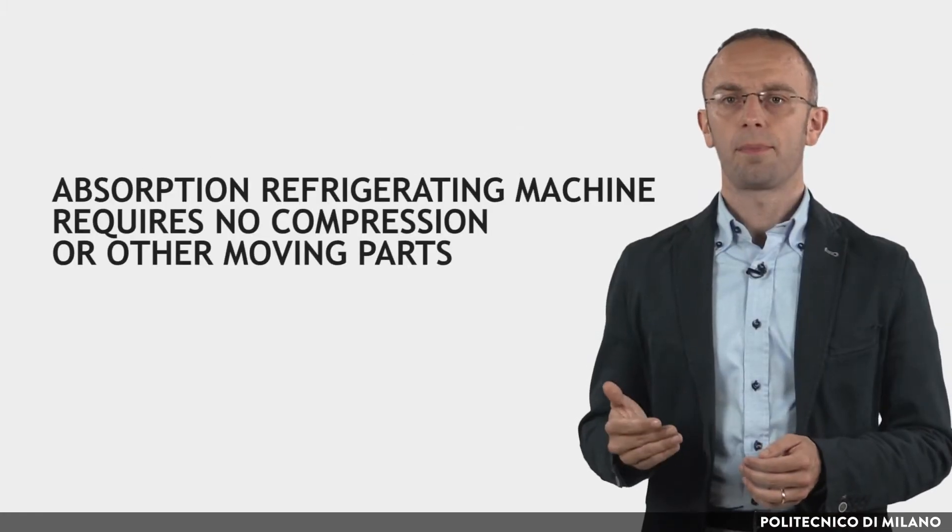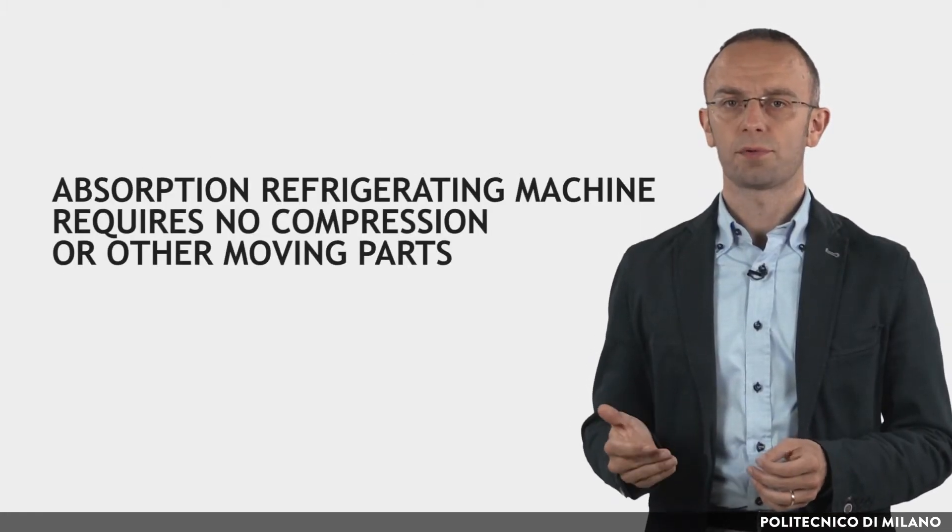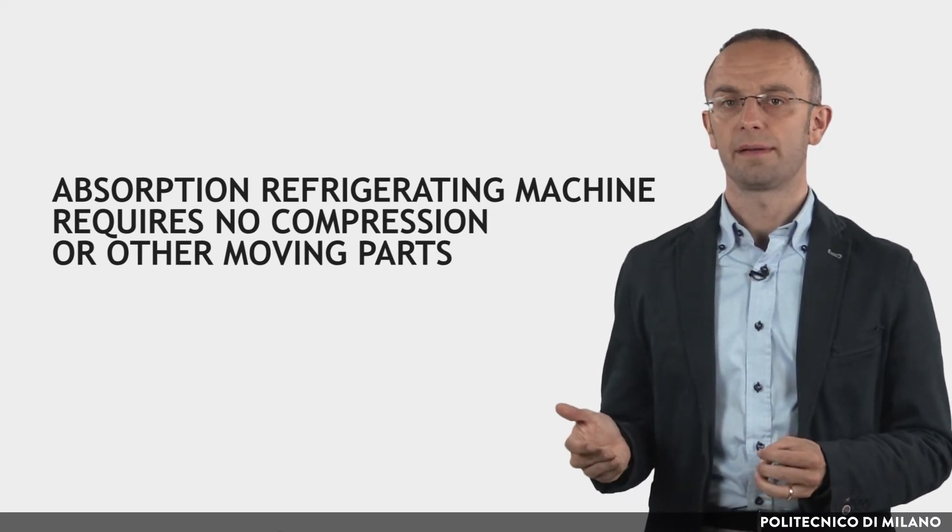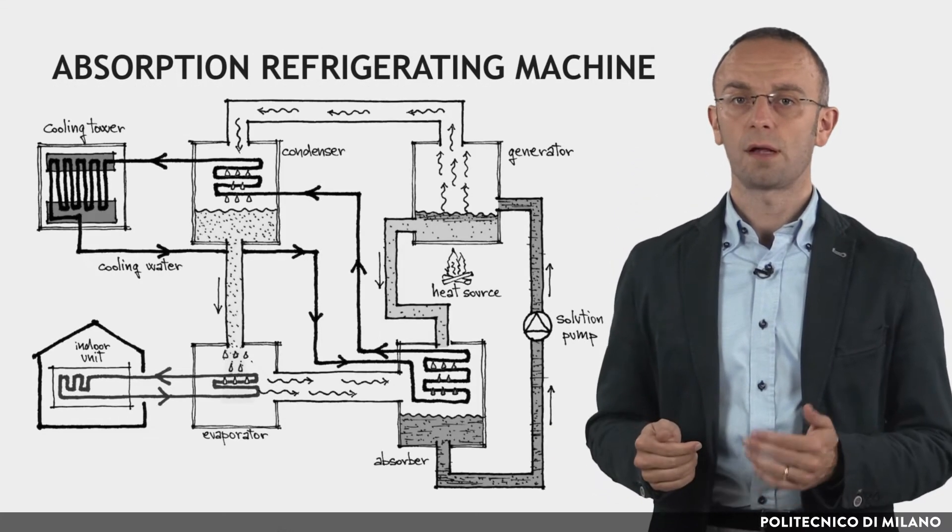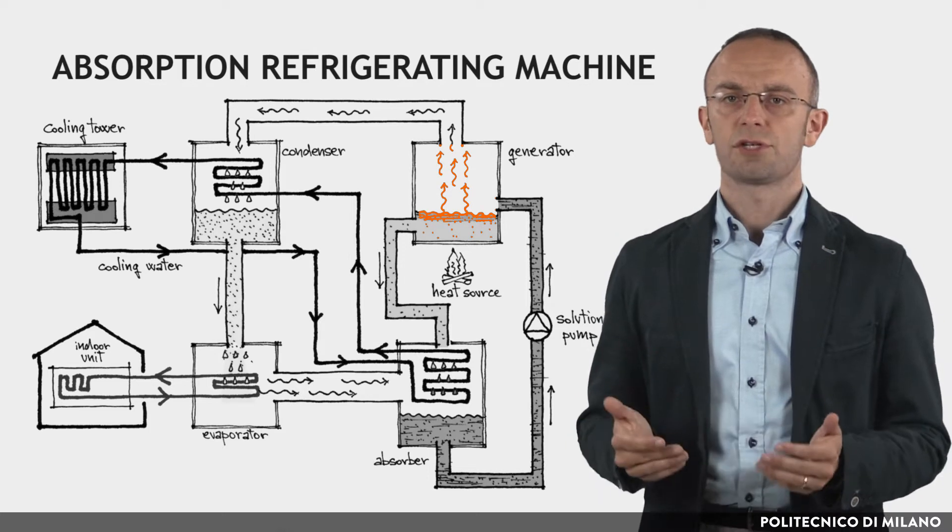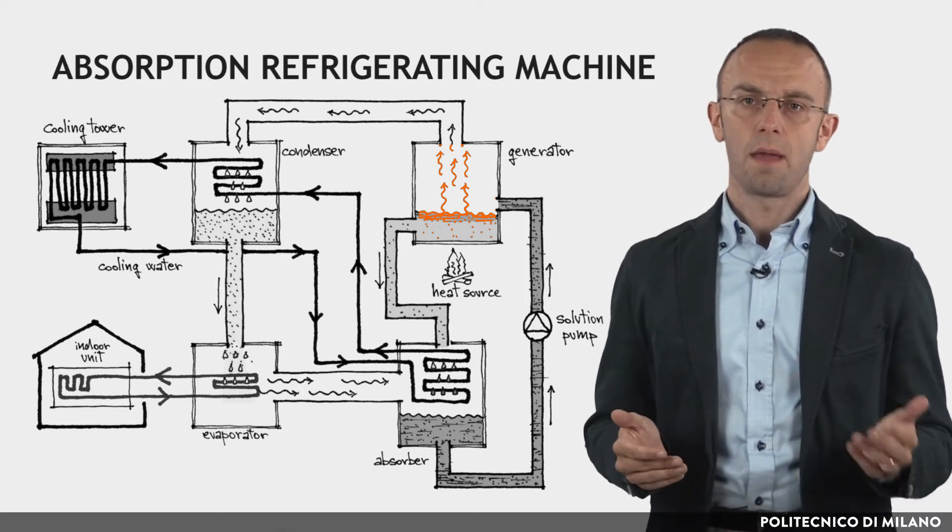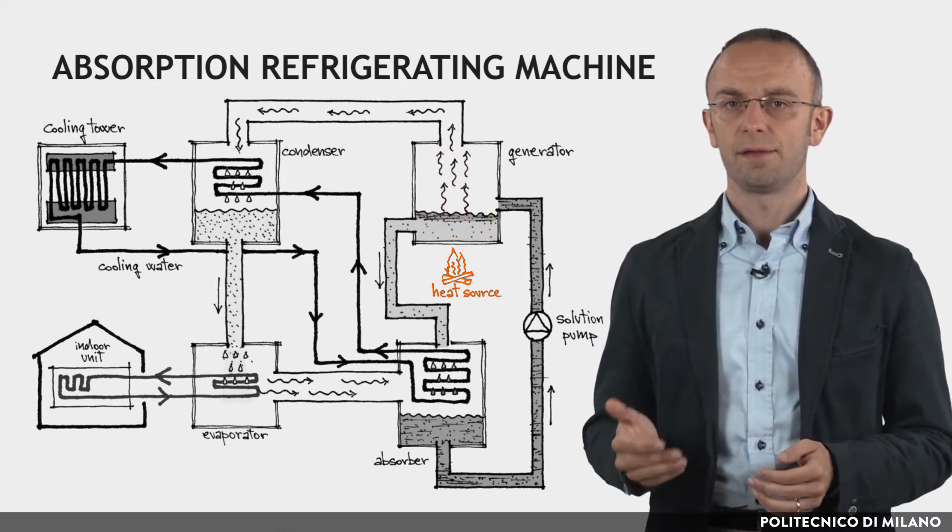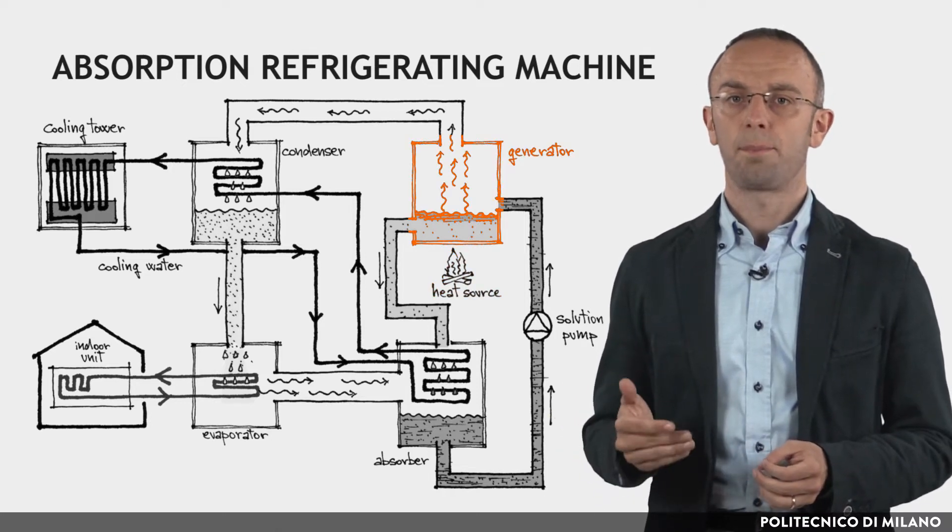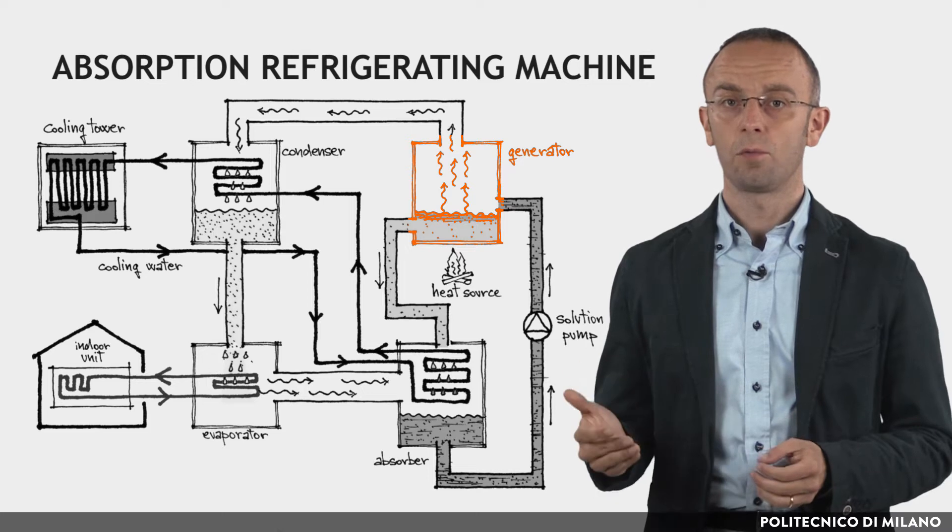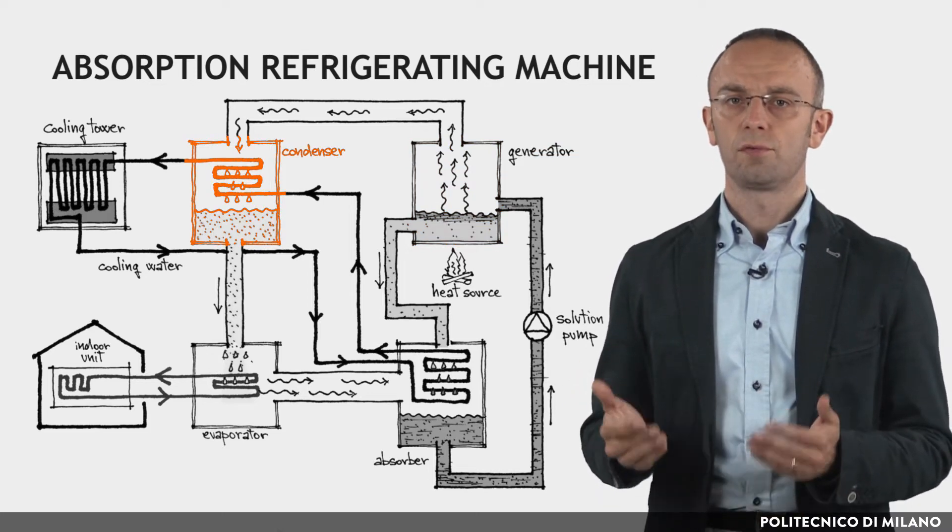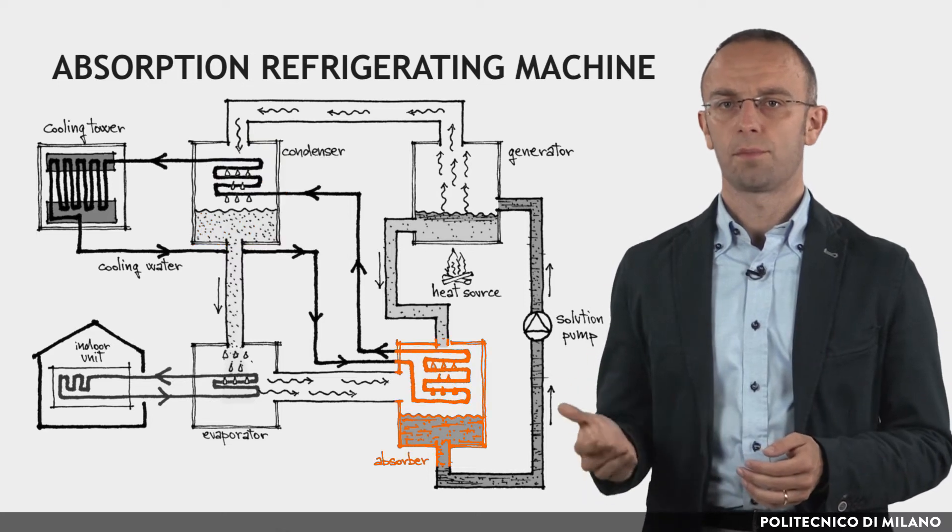Compared to vapor compressor chillers, the absorption one requires no compressors or other moving parts to operate the thermodynamic cycles, but uses a source of heat in place of the compressor. A refrigerant solution, such as water ammonia, is heated by a heat source in the generator, rising its temperature until it partially vaporizes and flows to the condenser. The remaining concentrated part of the solution flows down in the absorber chamber.